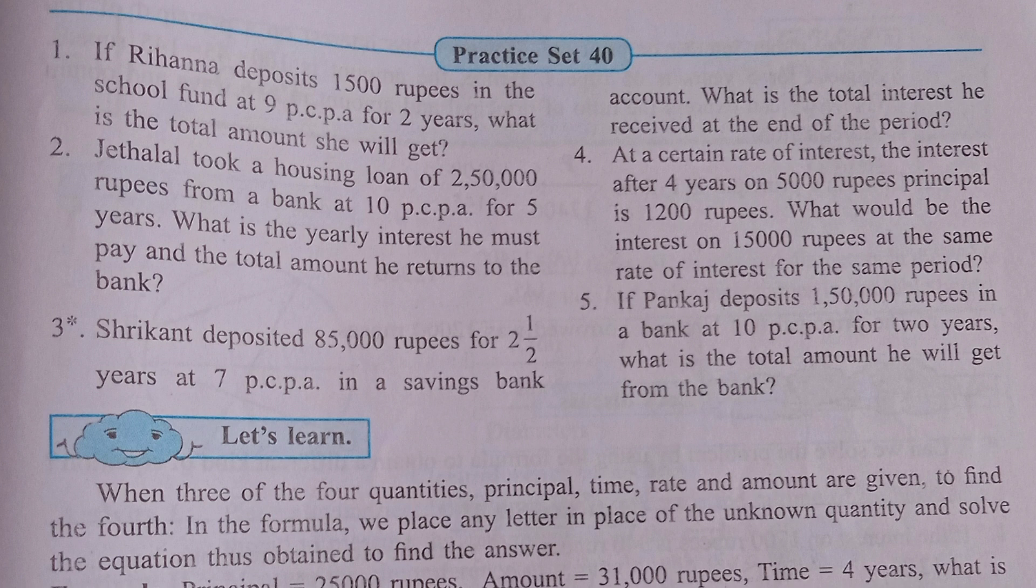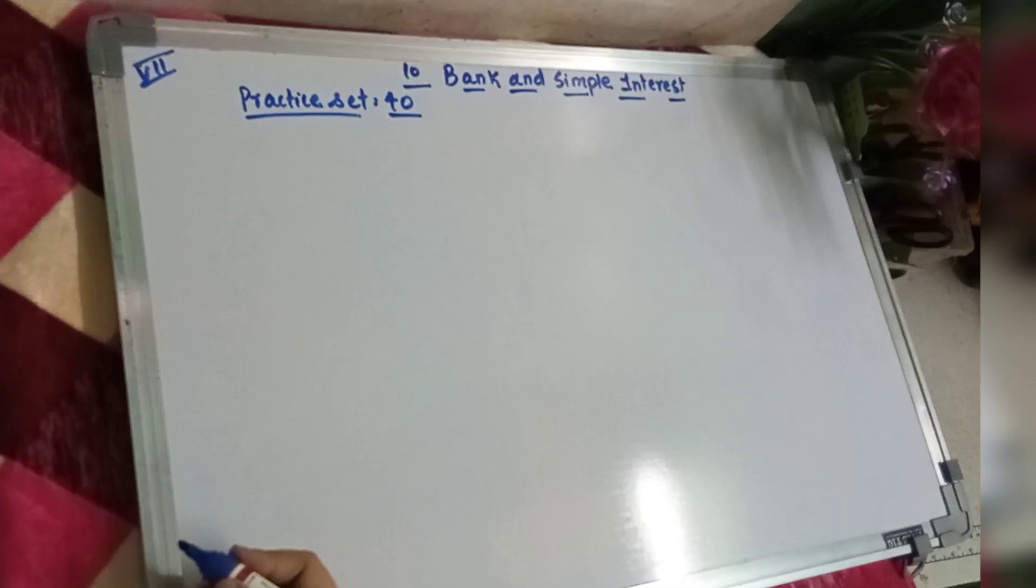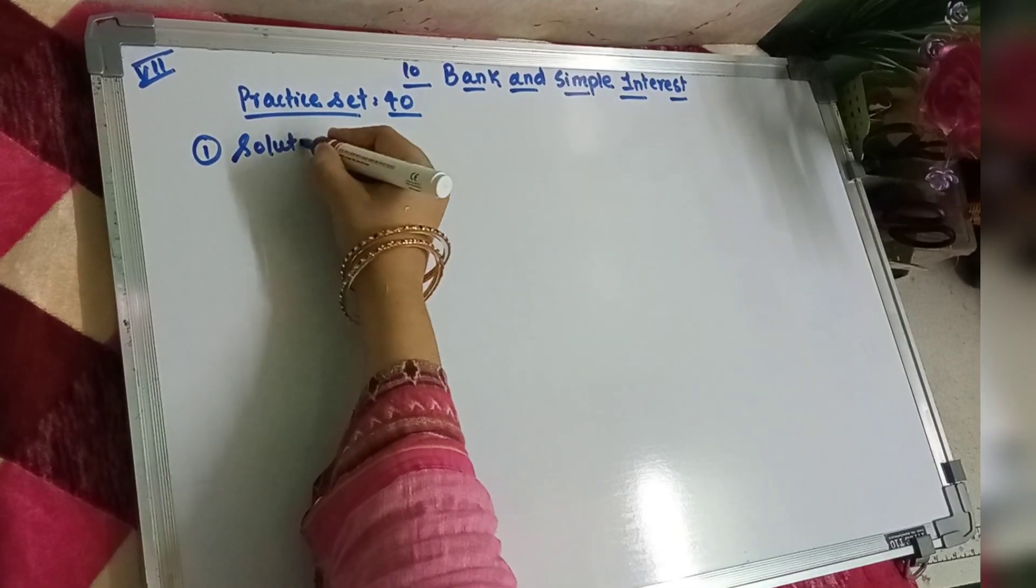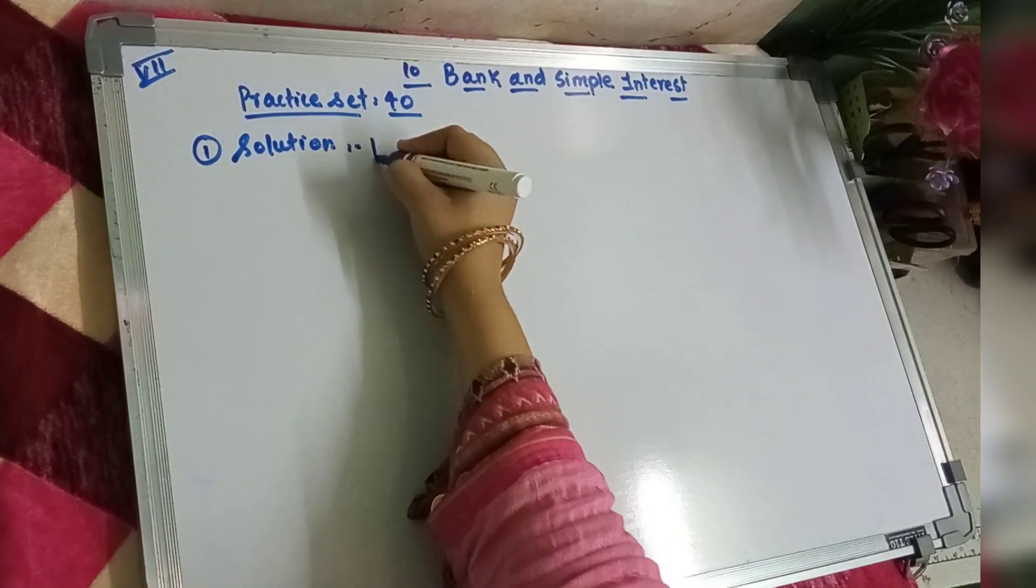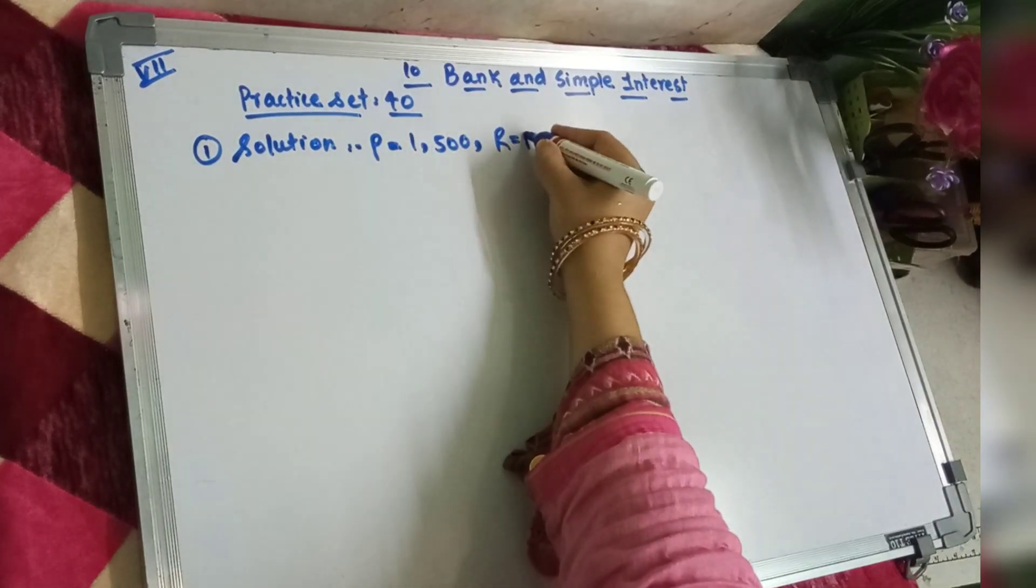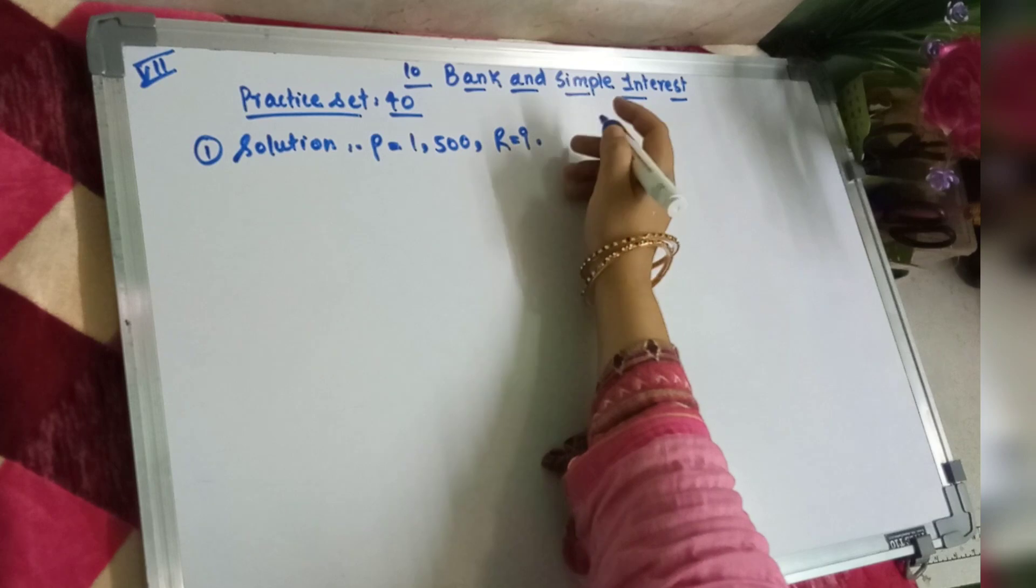First, if Rihanna deposits 1500 rupees in school fund at 9 PCPA for 2 years, what is the total amount she will get? Principal yani deposit diya hai 1500 and rate ka hai 9 PCPA and time yani valid years hai, woh 2 years diya hai.